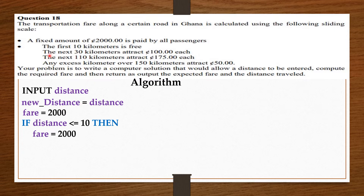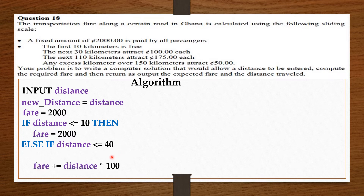The next 30 kilometers attract 100 cedis each. 30 plus 10 gives us 40, meaning if the distance is less than or equal to 40 kilometers, the passenger is going to pay the fixed amount plus the distance traveled within the 30 kilometers times 100 cedis. To get the distance traveled within those 30 kilometers, we take the initial 10 kilometers out of the distance traveled.